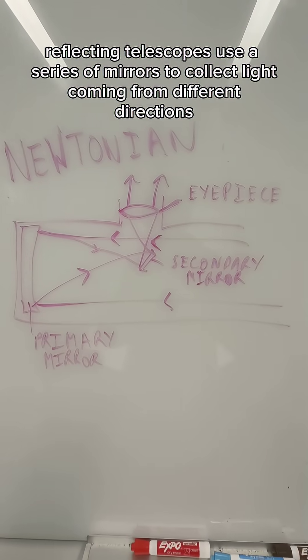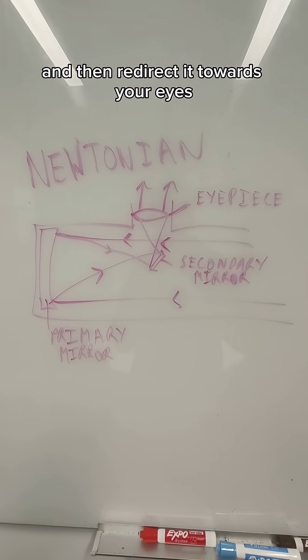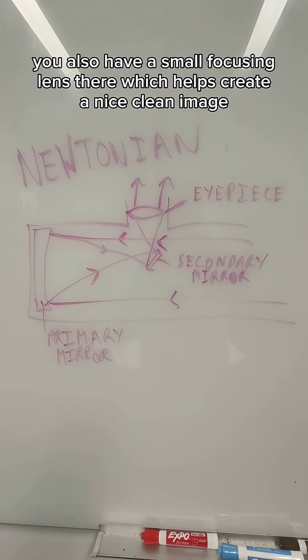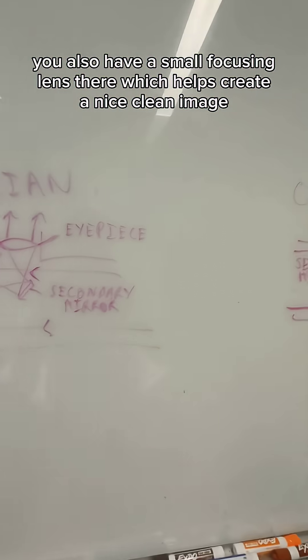Reflecting telescopes use a series of mirrors to collect light coming from different directions and redirect it towards your eyes. You also have a small focusing lens there which helps create a nice clean image.